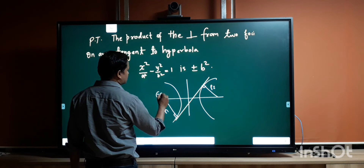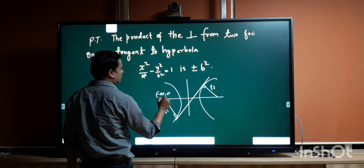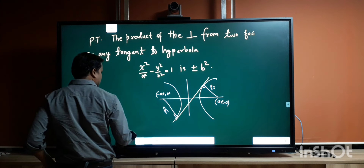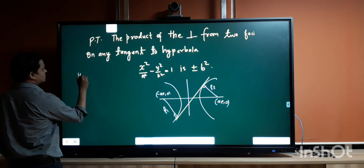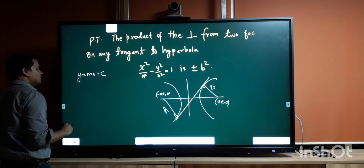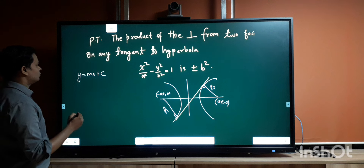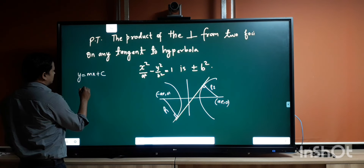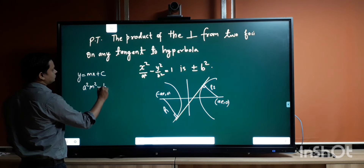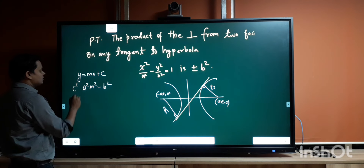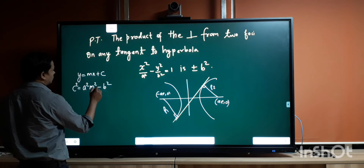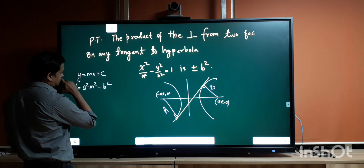The coordinates of the first focus will be (-ae, 0) and the second focus will be (ae, 0). Taking the tangent line: let the line be y = mx + c, and the condition of tangency for this line to be tangent to the hyperbola is given as c² = a²m² - b².